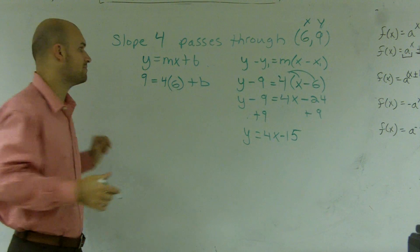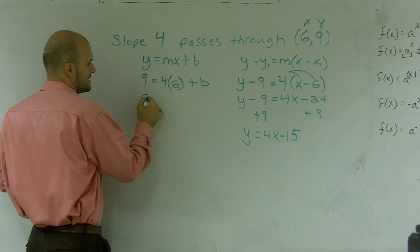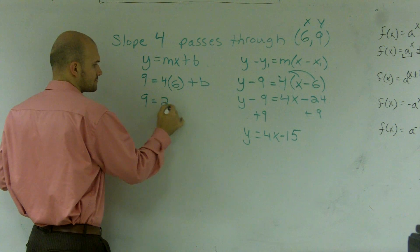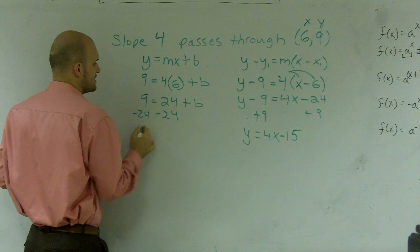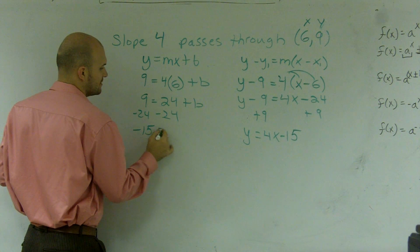Now, again, I don't know what b is, so I'm going to have to solve for b. So what I get is 9 equals 24 plus b. I subtract 24 on both sides, and I get negative 15 equals b.